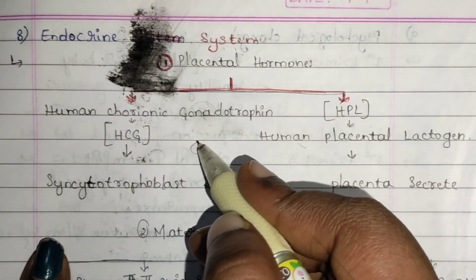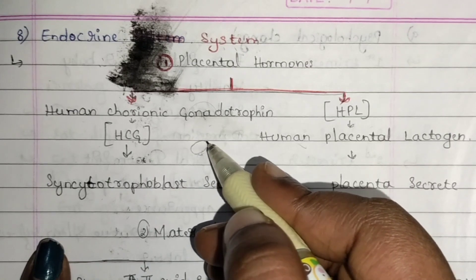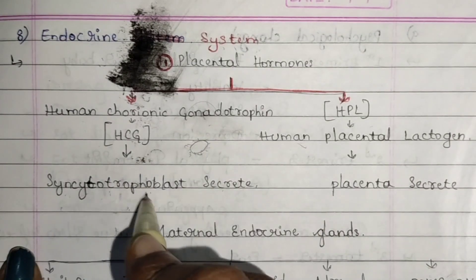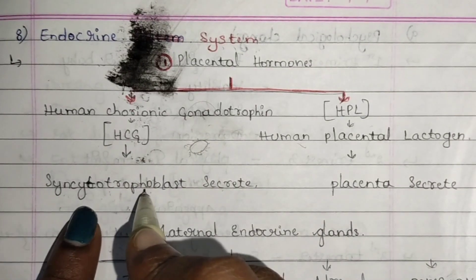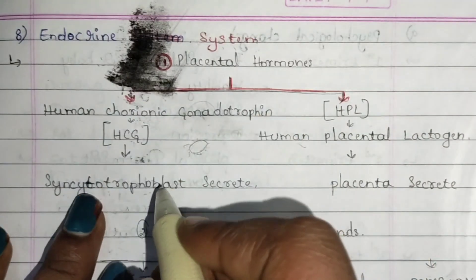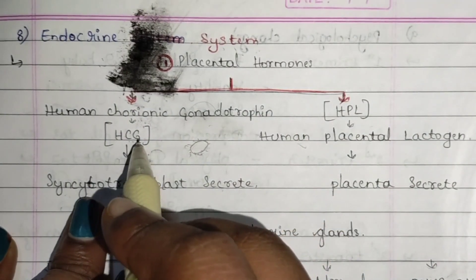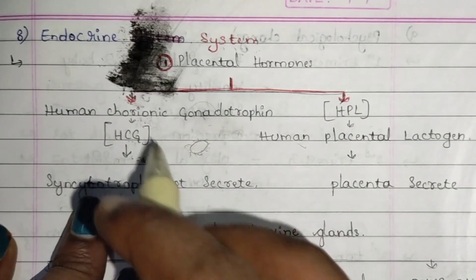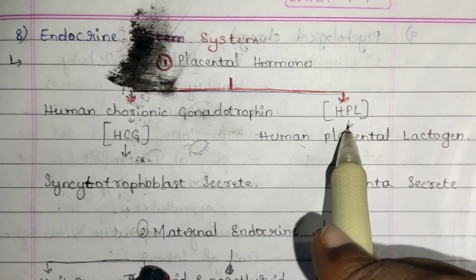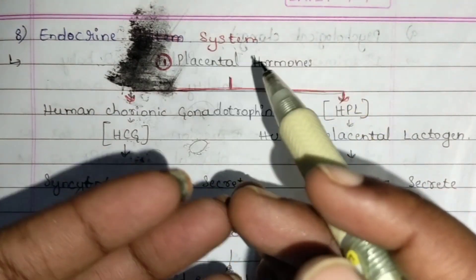HCG is useful in that the syncytotrophoblast secretes it. Around the placenta, a layer is produced that is known as the syncytotrophoblast, and this layer is produced or secreted with the help of the HCG hormone.